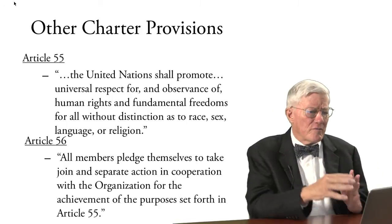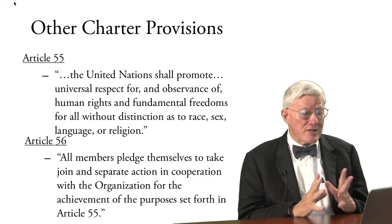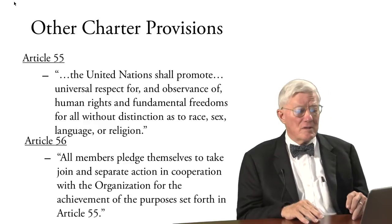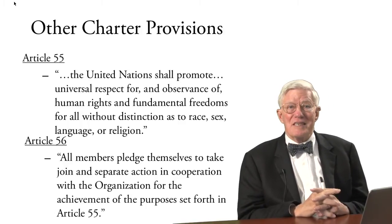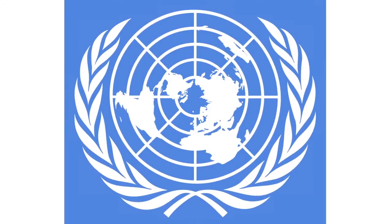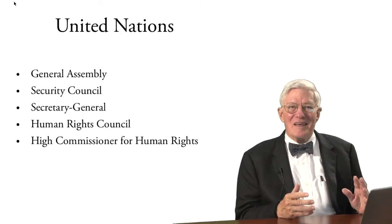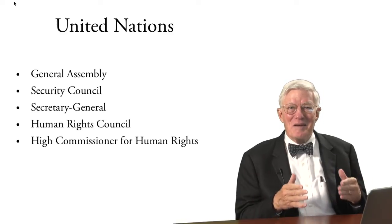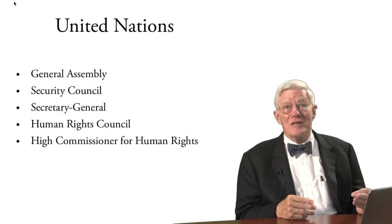Articles 55 and 56 go further. Article 55 provides that the United Nations shall promote universal respect for and observance of human rights. Article 56 has members pledge themselves to take joint and separate action in cooperation with the UN for the achievement of those purposes. So the UN, in its preamble and in very specific articles, commits to promoting human rights, and another article leads us more directly down the path to achieve human rights.